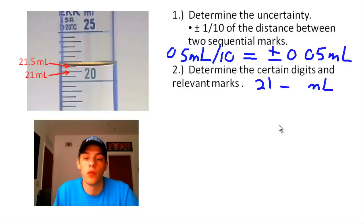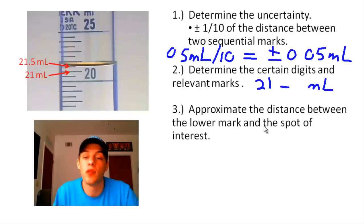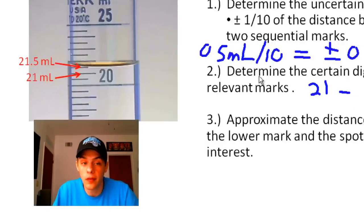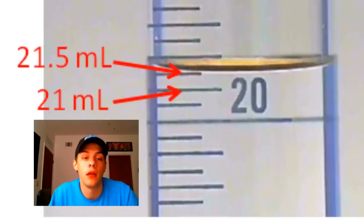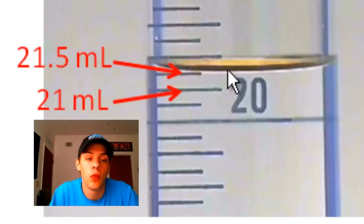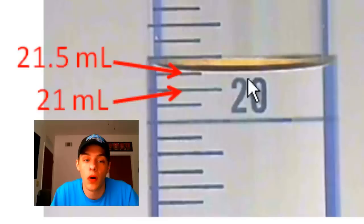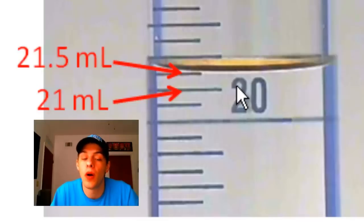The next step is to approximate the distance between the lower mark and the spot of interest. The bottom of this curve appears to be just below the higher mark, so I'm going to choose 9 tenths. Our number of tenths in this case is 9.